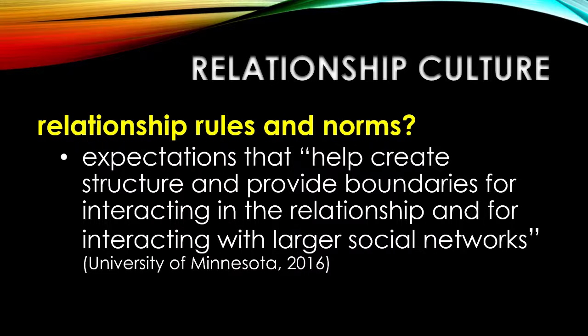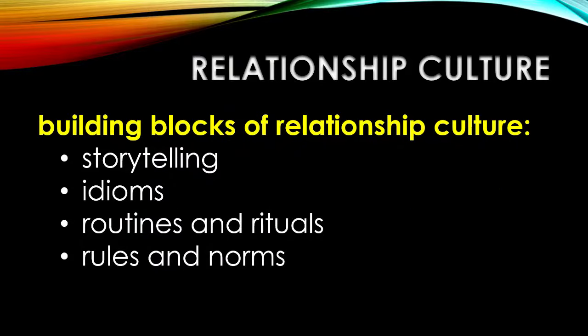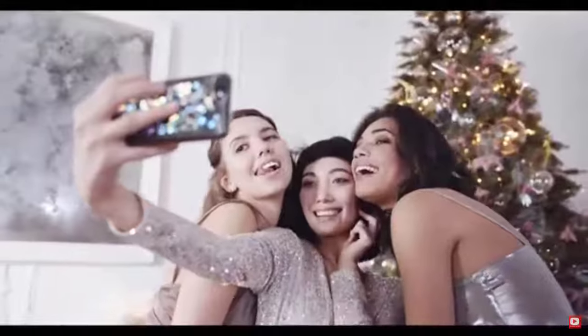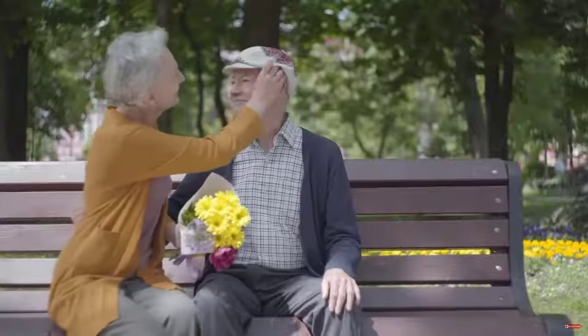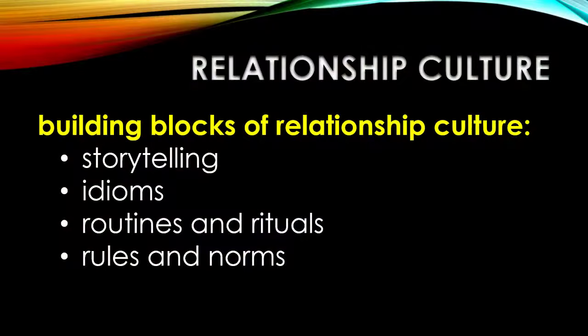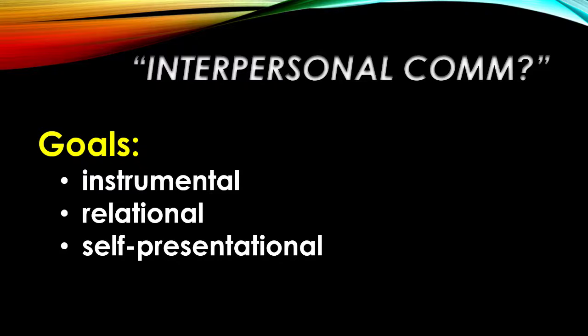When we do that, we're signifying that this relationship — this cultural thing we have between us — is something we each find important. So through storytelling, the use of idioms, through routines and rituals, through the establishment of rules and norms, we develop a culture in our relationship. Ways of understanding ourselves, our connection to the other person, and ways that help us see the world through the lens of this relationship and give us rules and expectations for how we ought to act towards one another and towards the world around us. And throughout this building of relational culture, we're constantly engaged in the kind of communication that helps us meet our instrumental, relational, and self-presentational goals.